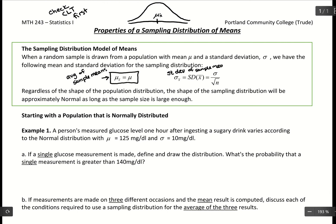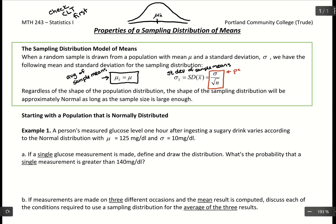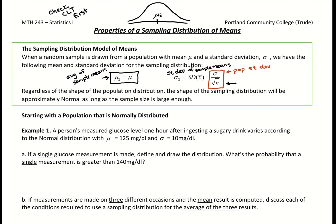To calculate the standard deviation of sample means, you take the population standard deviation and divide by the square root of the sample size. The standard deviation will always shrink compared to the population standard deviation. If you plug in a small value like n=1, dividing by one doesn't change it at all. Dividing by two shrinks it a little. But if you plug in a sample size of a thousand, dividing by a really large value shrinks the standard deviation dramatically.